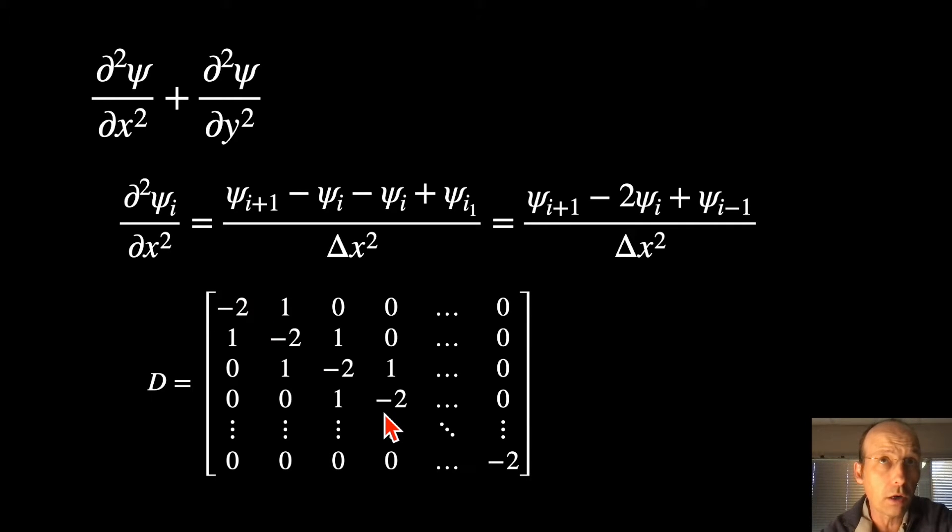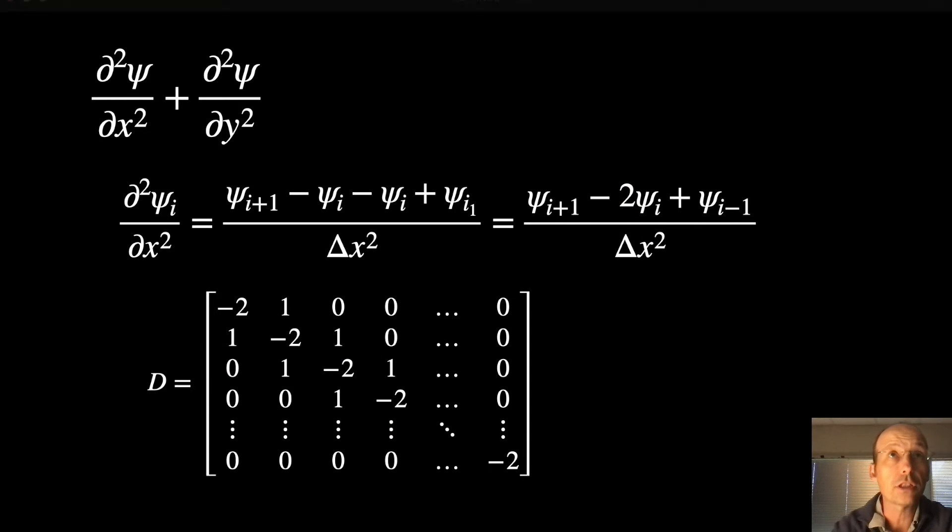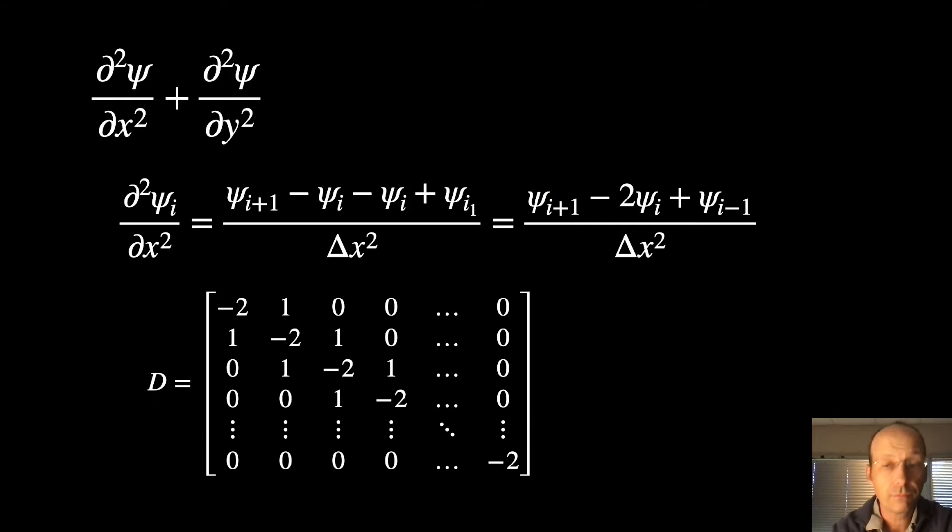And we can write this as the following matrix. It's what we did before. That's what we did. We had the negative twos, the ones, the ones. The negative two goes with that. The ones go with those. And it works out just fine. But we want to represent this as this weird combination of matrices, because we have both an x and a y. So this is going to be the derivative for x. That's the derivative for y. And it's called the Kronecker sum, I think. I don't fully understand it.